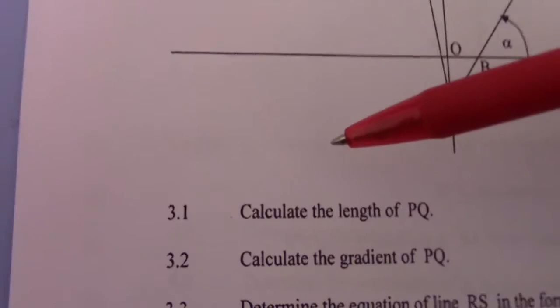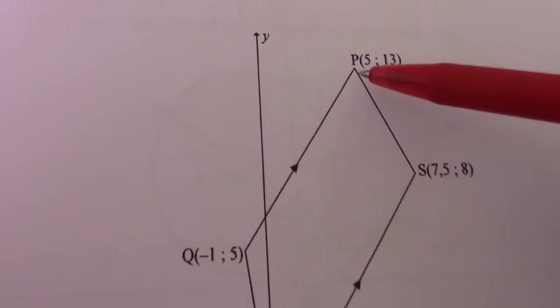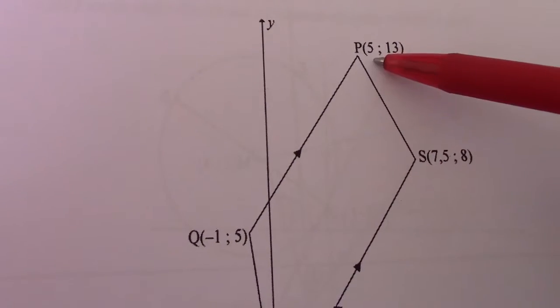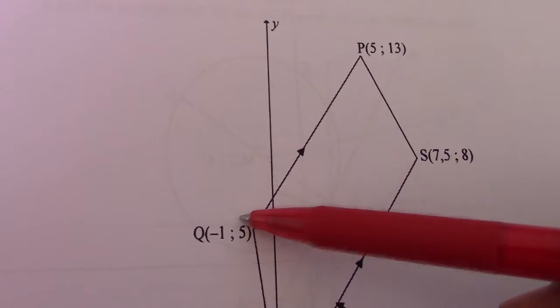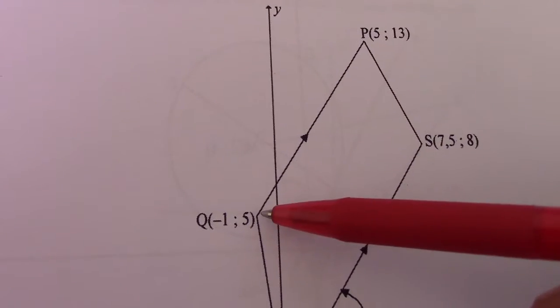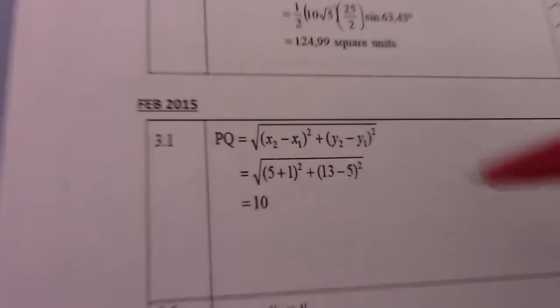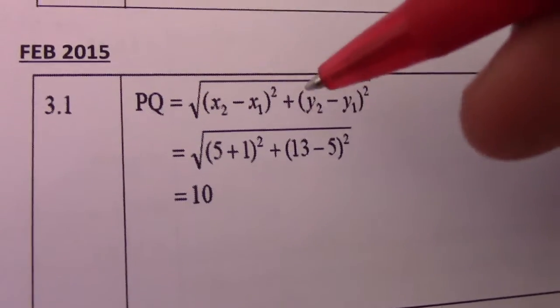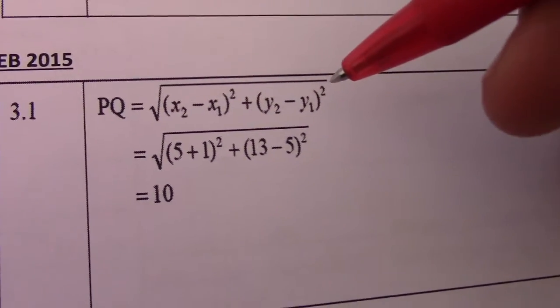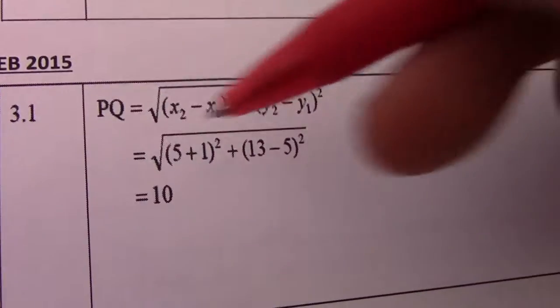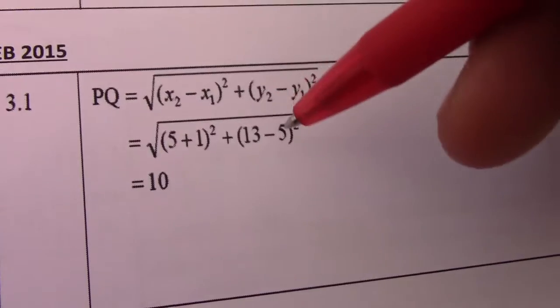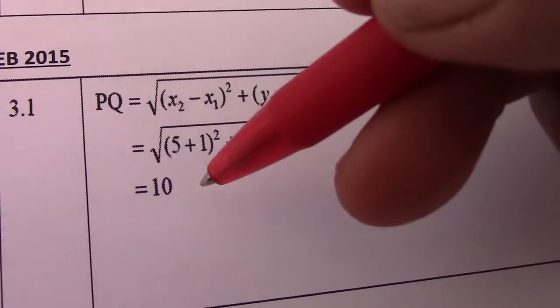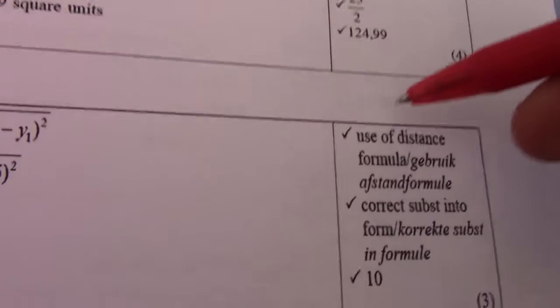Question 1: Calculate the length of PQ. So we want to know how far is it from P to Q. The distance formula would be root of (5 minus -1)² plus (13 minus 5)². So PQ equals root of (5+1)² plus (13-5)², which is root of 36 plus 64, giving 100. The square root of 100 gives me 10.